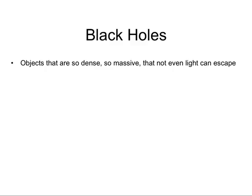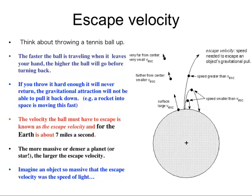The basic idea behind what a black hole is is actually fairly simple if you think about it in terms of escape velocity. Escape velocity is the speed with which you have to travel in order to escape a planet or some gravitational object. Imagine you've got a tennis ball and you're on Earth and you throw it up — it goes up and comes back down. The faster you throw it, the farther up it goes before turning back. But if you threw it fast enough, it would escape the gravitational tug of Earth altogether and fly off.